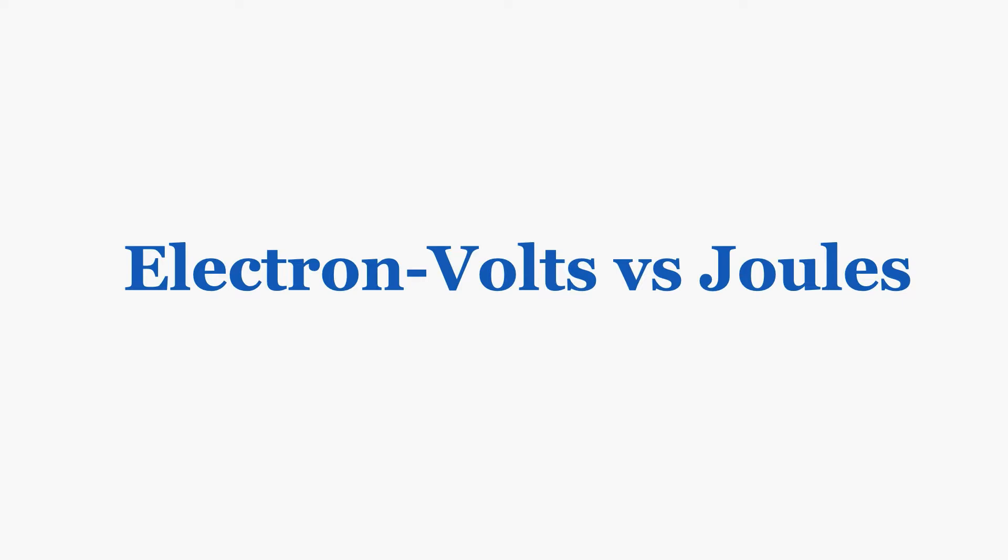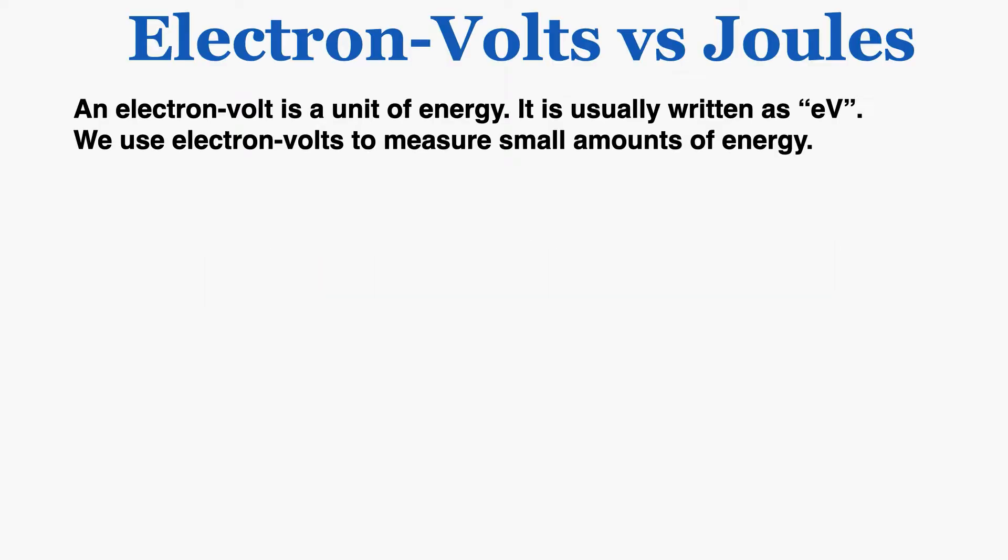This video is about electron volts and how they compare to joules. An electron volt is a unit of energy just like a joule. It's usually written as eV — lowercase e and capital V. We use electron volts to measure small amounts of energy.